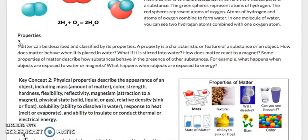Properties. Matter can be described and classified by its properties. A property is a character or feature of a substance or an object. How does matter behave when it's placed in water? What if it is stirred into water? How does matter react to a magnet? Some properties of matter describe how substances behave in the presence of other substances. For example, what happens when objects are exposed to water or magnets? What happens when objects are exposed to energy?